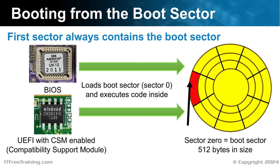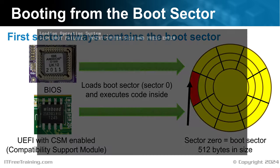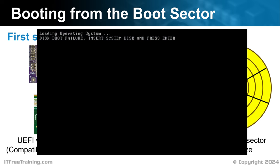Secure Boot is required by Windows 11, so CSM needs to be disabled to boot Windows 11. When using BIOS or UEFI with CSM enabled, the initial step involves loading and executing code from the boot sector. When you boot the computer, if the boot sector cannot be found, you will get an error message — the wording may vary by computer, but essentially it means the computer could not boot. 512 bytes is not enough to boot an operating system, but it is enough to load something that can.